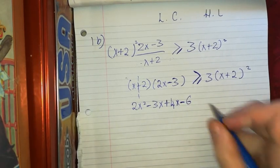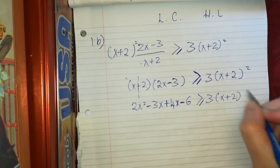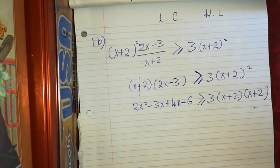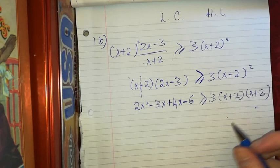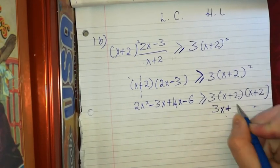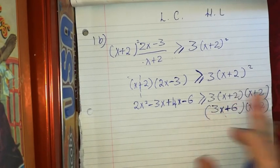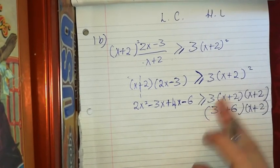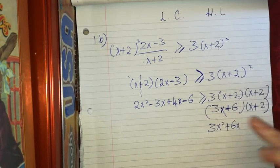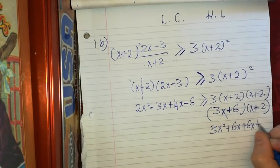On the right side, I need to square out (x plus 2) and multiply by 3. I'll multiply the 3 in first to get (3x plus 6) by (x plus 2). So 3x by x gives 3x squared, 3x by 2 gives 6x, 6 by x gives 6x, and 6 by 2 gives 12.